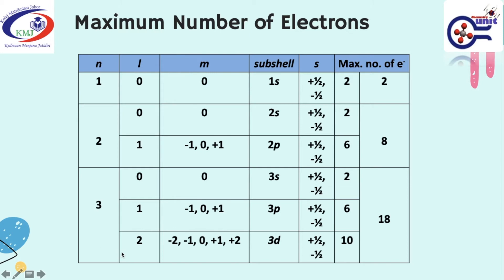Likewise, when you have l is equal to 2, the values of m are negative 2, negative 1, 0, positive 1, and positive 2. So you have five orbitals. With two maximum electrons in each orbital, you have a maximum number of 10 electrons in total in five different orbitals.